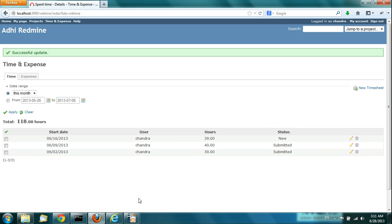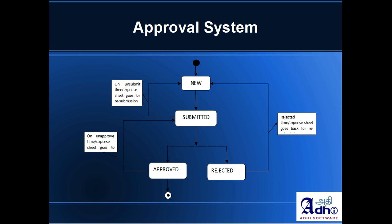So these are the activities of the approval system. Timesheets when created are in the state of new. When submitted, they go to the submitted state. A submitted timesheet can be approved or rejected. A submitted timesheet can be unsubmitted to go back to new, and an approved timesheet can be unapproved to go back to the submitted state. I think we have covered the approval system and the demo.